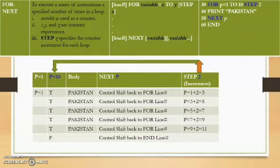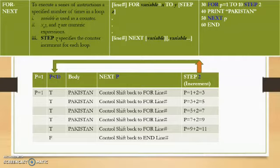In this loop, a condition is checked: the body will execute as long as the value of p is less than 10. As the value of p is incremented to a value greater than 10, the condition will be terminated and control will shift to the next statement after the loop.